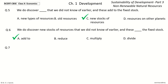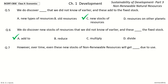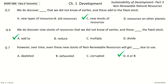Question seven: However, over time, even these new stocks of non-renewable resources will get — due to use. The options are depleted, exhausted, corrupted, or A and B. The answer is A or B: however, over time, even these new stocks of non-renewable resources will get depleted or exhausted due to use.